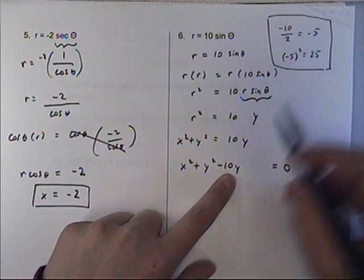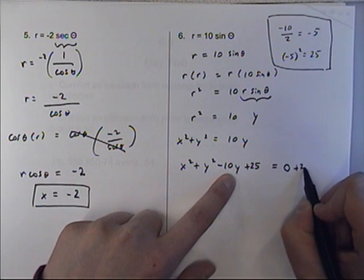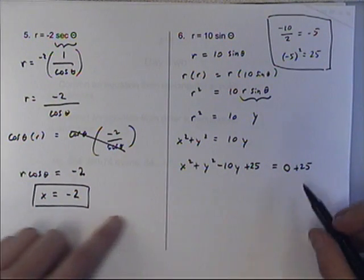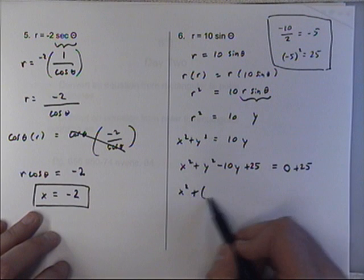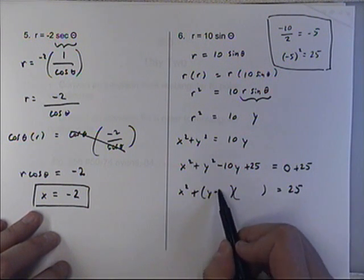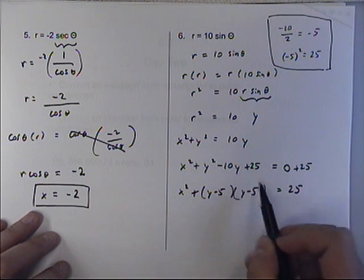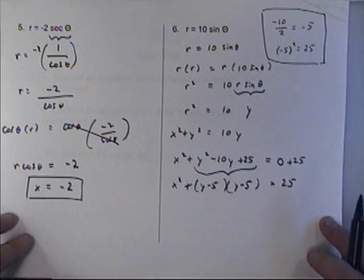And then, that is the number that you add on both sides. You add it here, and you add it here. Because whenever we add something to one side of an equation, we have to add it to the other. And then, this can be factored into the same binomial. It is y minus 5 times y minus 5. It's supposed to do that. It's supposed to have matching binomial factors there.